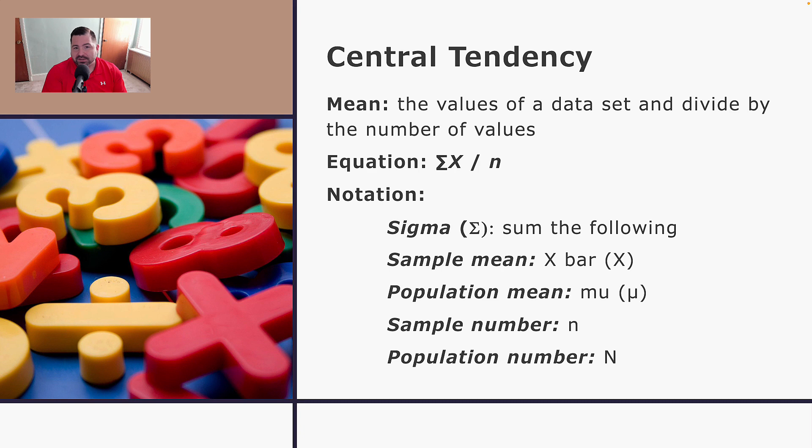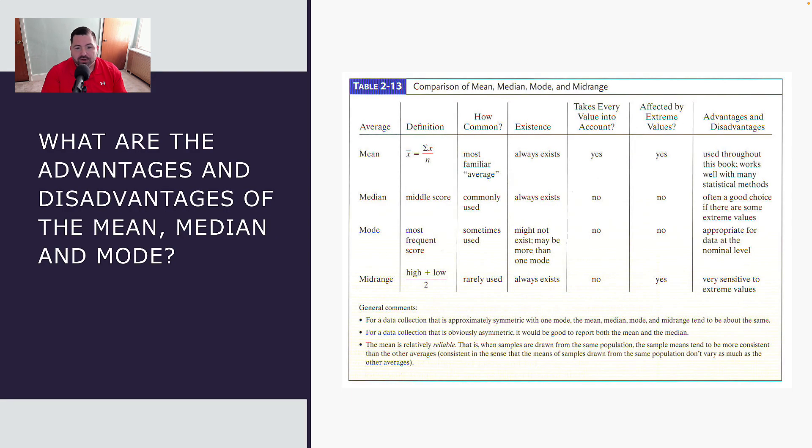So central tendency represents the mean or the average value, the median or the middle value, and the mode, which is the value that occurs most often.